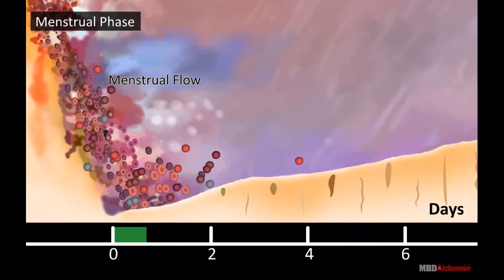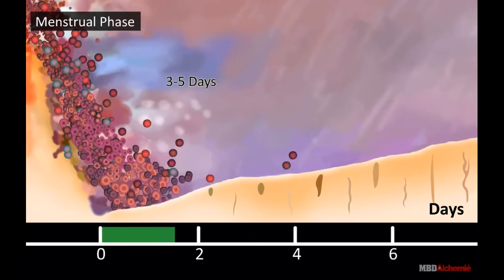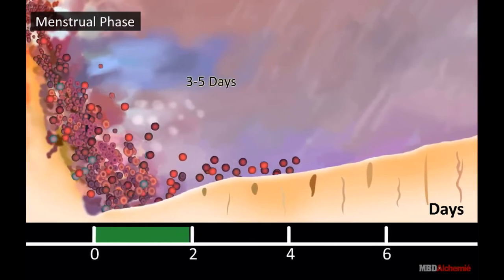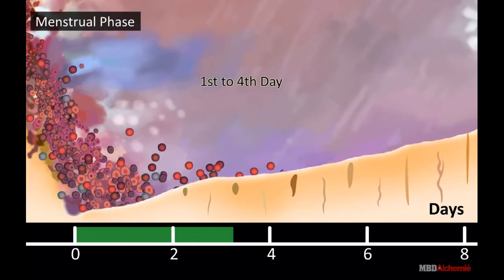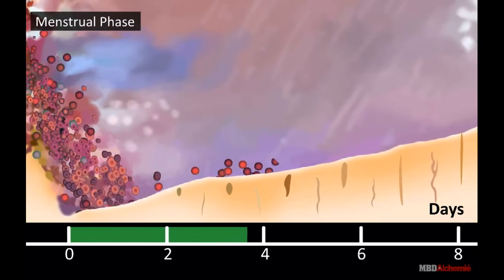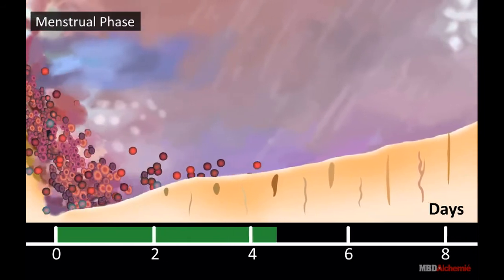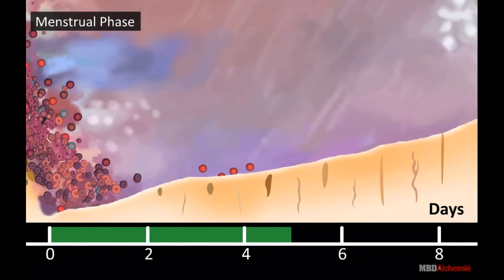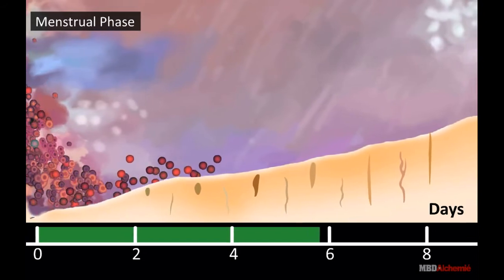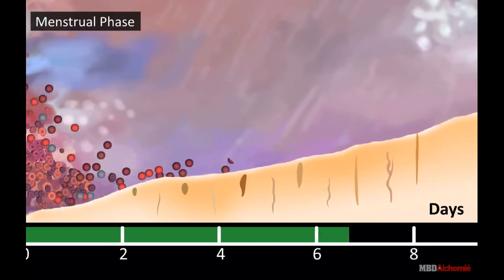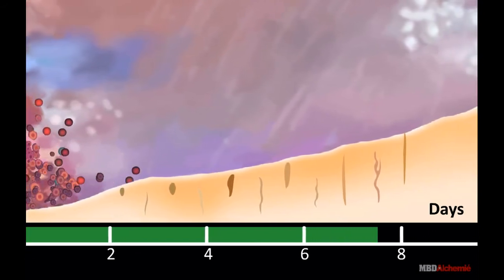Menstrual Phase: It lasts for about 3 to 5 days and extends from the first to the fourth day of the menstrual cycle. When the ovum remains unfertilized, the corpus luteum starts degenerating and the level of progesterone in the blood declines.